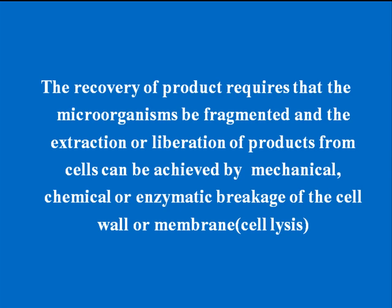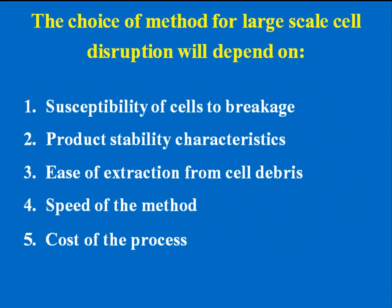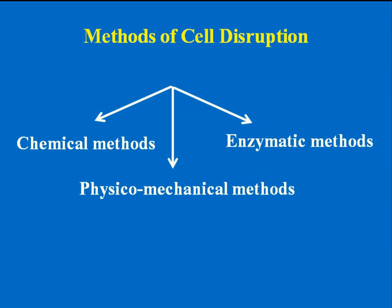The extraction or liberation of products from cells can be achieved by mechanical, chemical, or enzymatic breakage of the cell wall or membrane — that is, cell lysis. There are a number of methods available for large-scale cell disruption, and characteristics to consider include susceptibility of cells to breakage, product stability, ease of extraction from cell debris, speed of the method, and cost of the process.